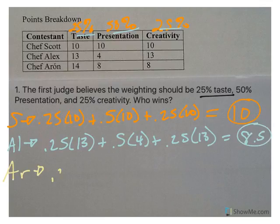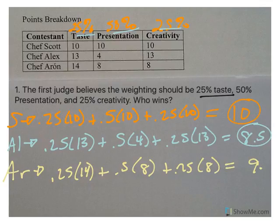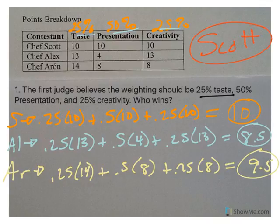Let's go to Chef Aaron. Same concept, 25% times 14 plus 50% times 8 plus 25% times 8, and the score is 9.5. So according to Chef number one, Scott is the winner with number 10.